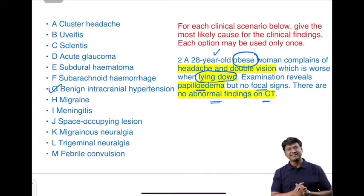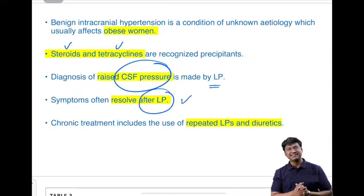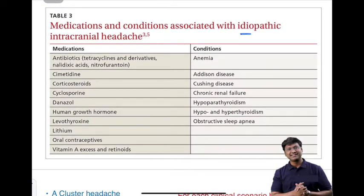Benign intracranial hypertension is a condition of unknown etiology, usually seen in obese females. Drugs associated with its development include steroids, tetracyclines, nalidixic acid, nitrofurantoin, and vitamin A supplements (retinoids). Diagnosis is confirmed by raised CSF pressure on lumbar puncture, and the headache often resolves after lumbar puncture. Chronic treatment includes repeated lumbar punctures and diuretics.